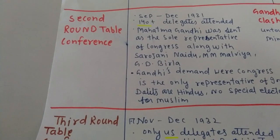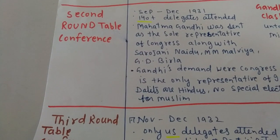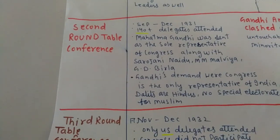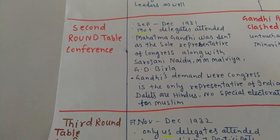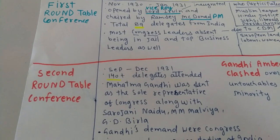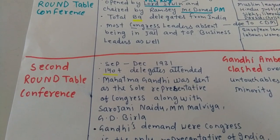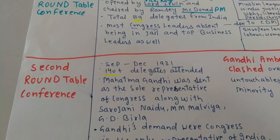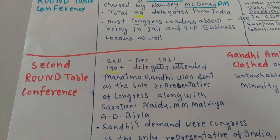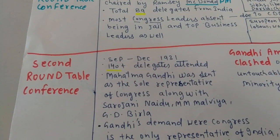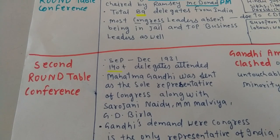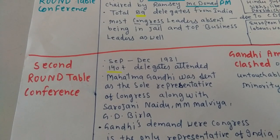All three roundtable conferences were set up to discuss the future constitution of India, and their recommendations were raised in future deliberations as well. The constitution of India was mostly influenced by the British Parliament, shaped significantly by the outcomes of these conferences.